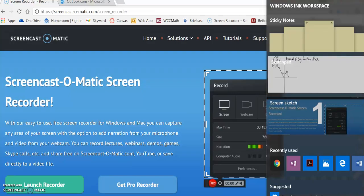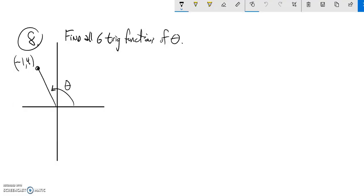Two, practice test one, question number eight. We're supposed to find all six trig functions of theta. This is at the point negative one, four.